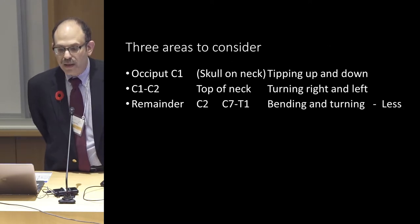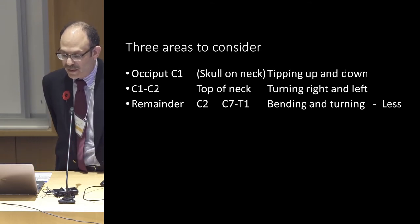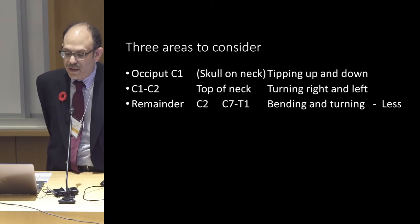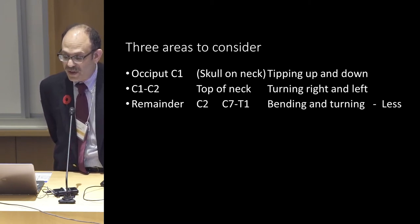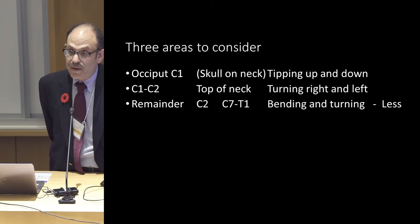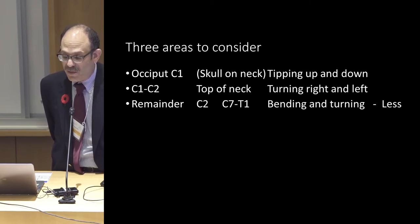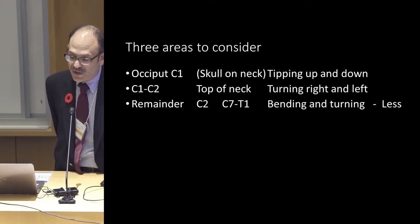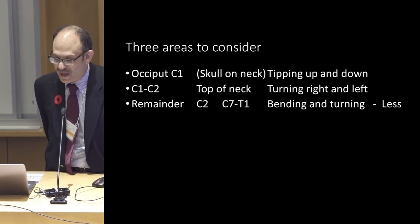There are three areas I'd like to consider mechanically, each slightly different. There's the skull on top of the cervical spine — occiput C1. There's the first two cervical spine levels, C1 and C2. And the remainder of the cervical spine — C2 through T1, the top of the thoracic spine.